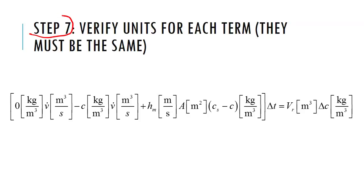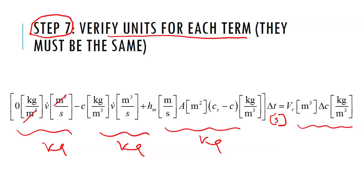This step 7, we actually have already done this, verifying unit for each term. So we can skip. This is kilograms per second times second. Each term is kilograms. But you should, for each problem, you should verify this. Otherwise this gives us unnecessary problems.